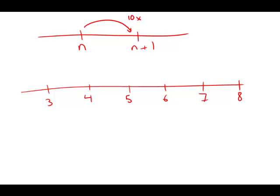On that scale, the intensity corresponding to a reading of 8 is how many times as great as the intensity corresponding to a reading of 3? Well, when we go up by a notch of 1, we're multiplying by 10. So we multiply by 10, then multiply by 10 again and again and again and again — we multiply by 10 five times.